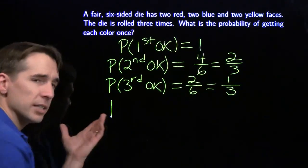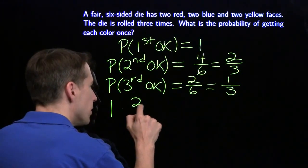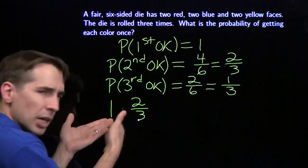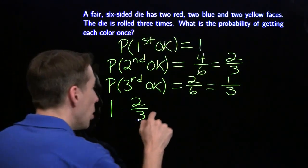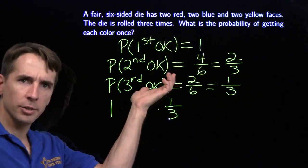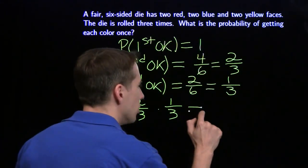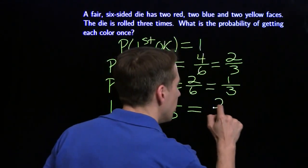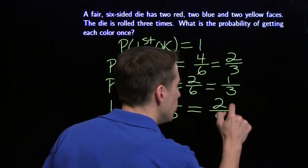We need to get past all three of these. We always get past the first step. Two-thirds of the time, we'll also get past the second step. Then of all the times we get past the first two steps, one-third of the time, we'll also get past the third step. Which gives us an overall probability of one times two-thirds times one-third, which is two-ninths.